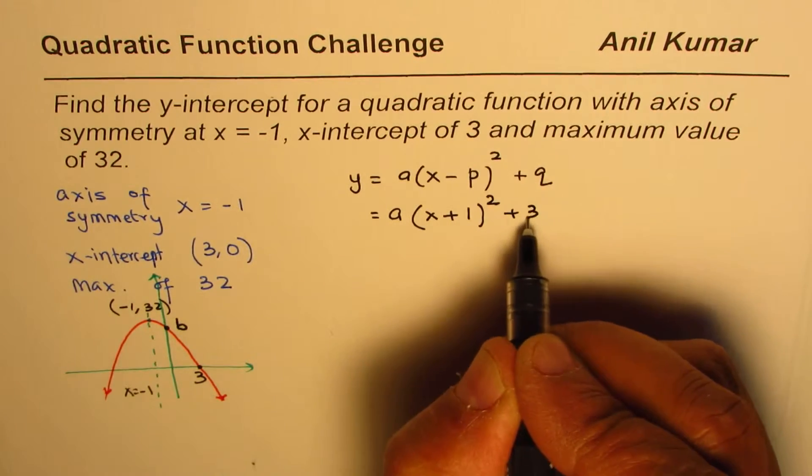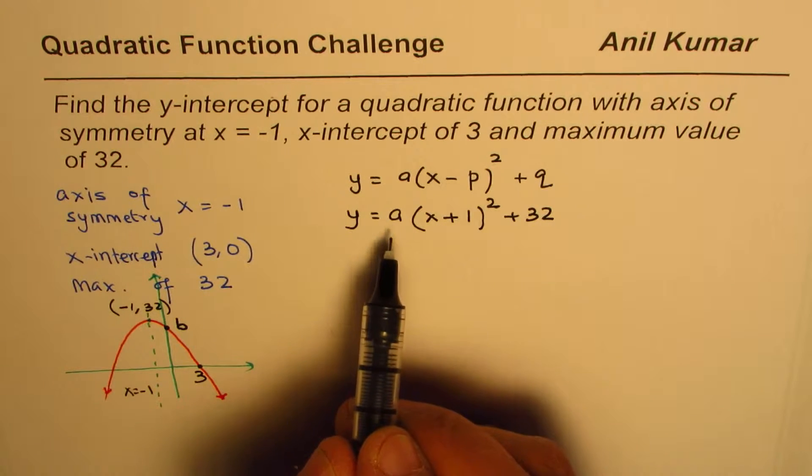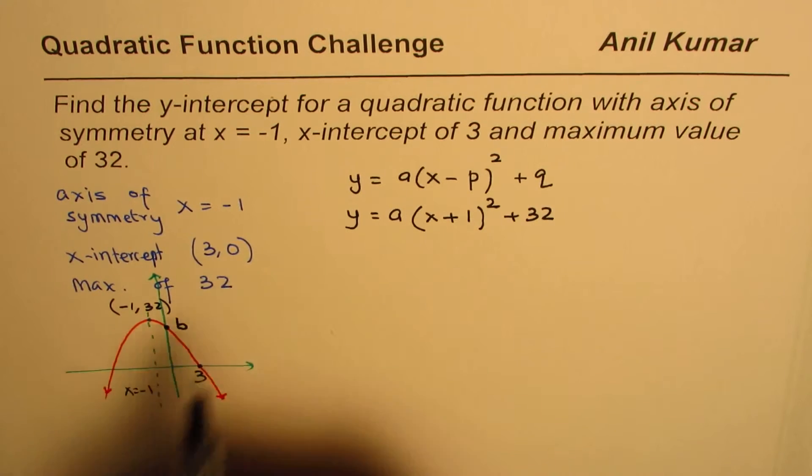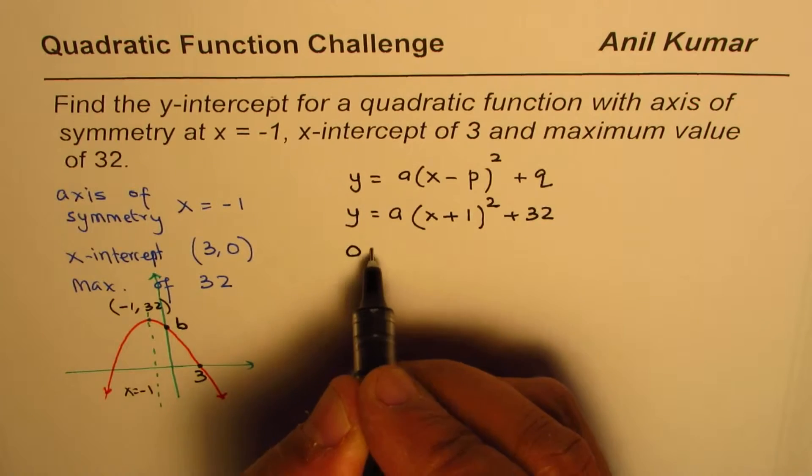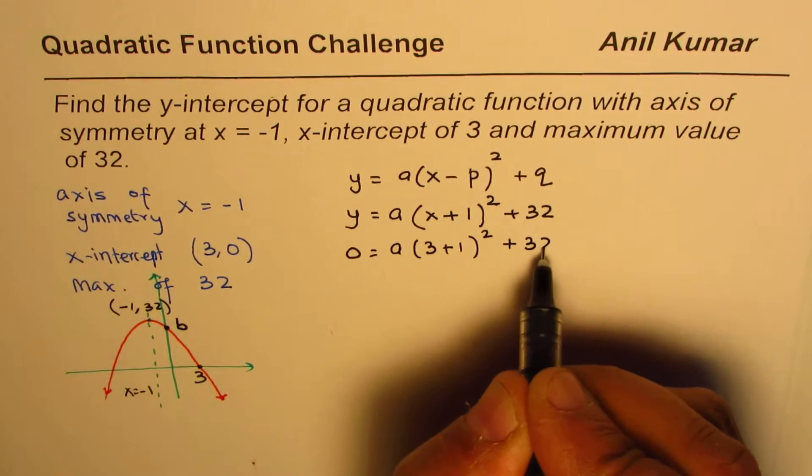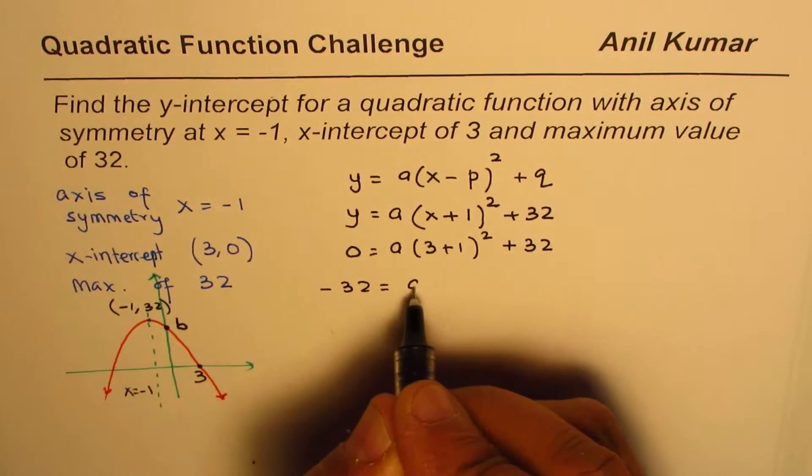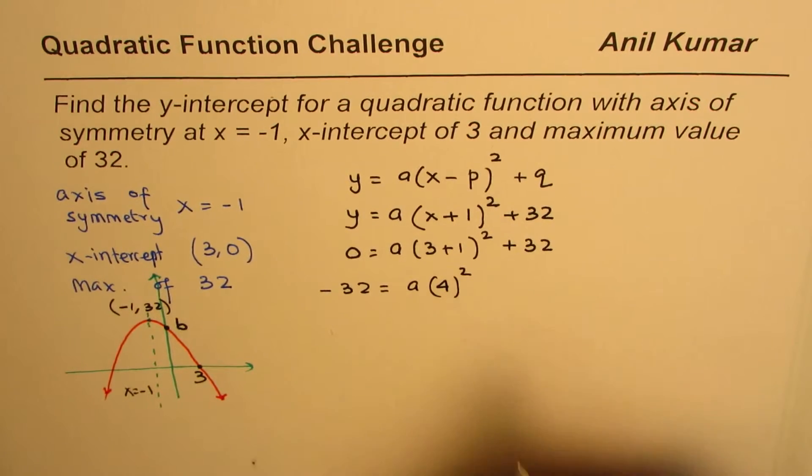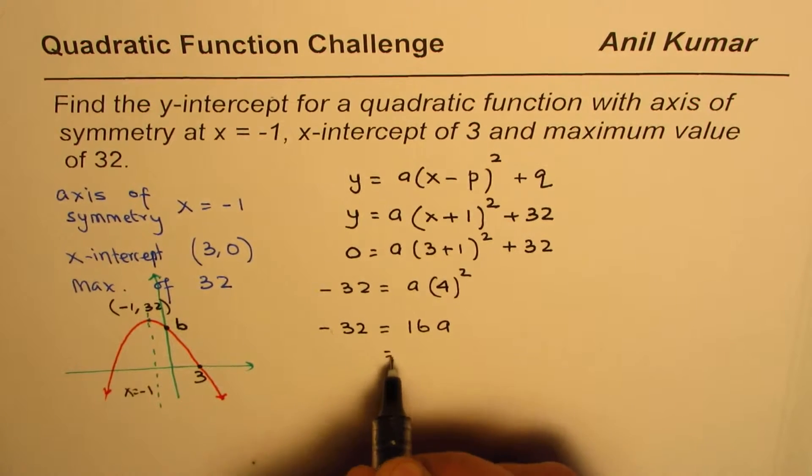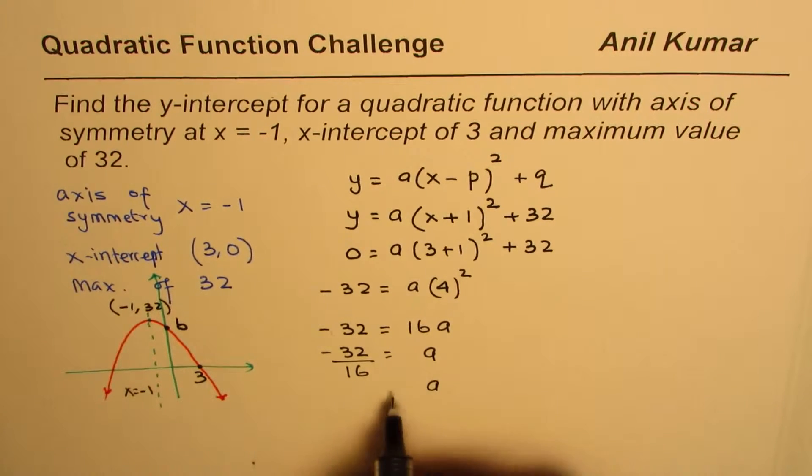So that is the equation which we get. Now we need to find the value of a. To find the value of a, we can use the x-intercept which is (3, 0). So I substitute 0 for y and 3 for x to find the value of a. Let's solve it: taking 32 to the left side gives us minus 32 equals a times 4 square, which is 16, right? So we could write this as 16a equals minus 32, and a equals minus 32 divided by 16, so that gives us value of a as minus 2.